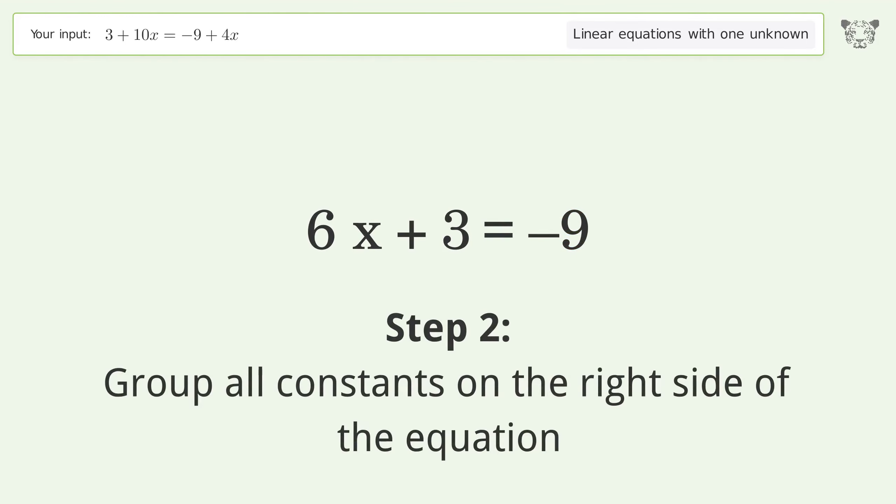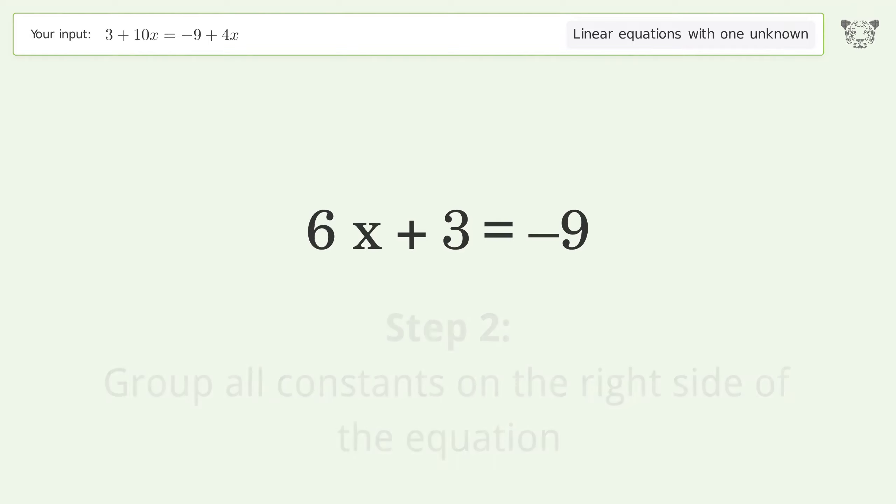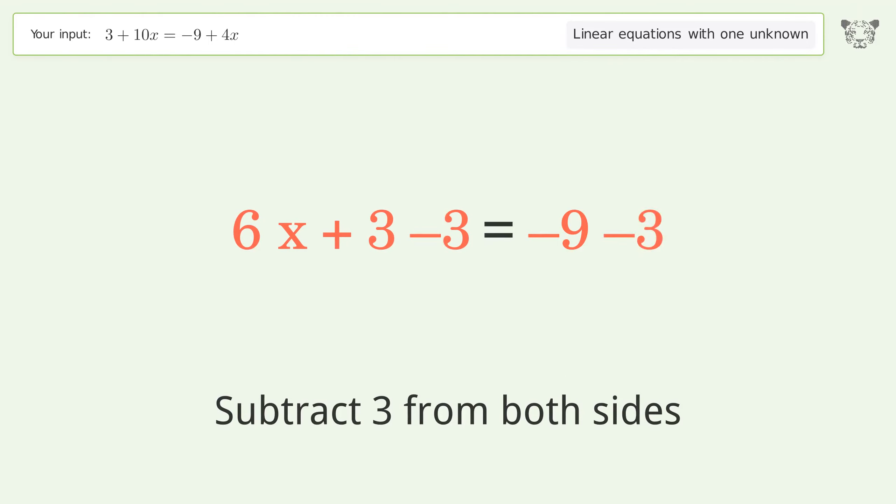Group all constants on the right side of the equation. Subtract 3 from both sides. Simplify the arithmetic.